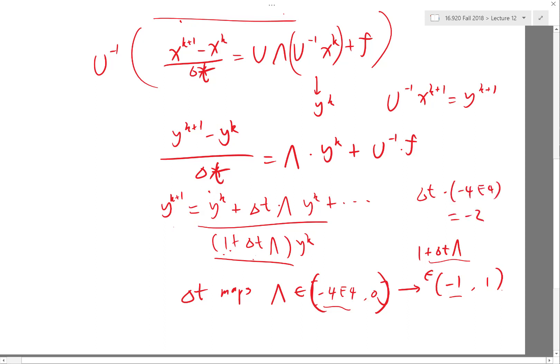two, right? So my delta t is going to be about basically 1 over 2e4.